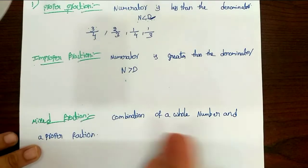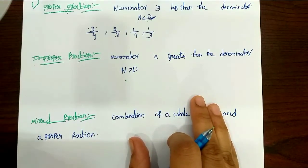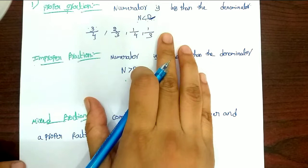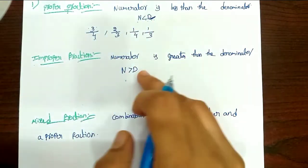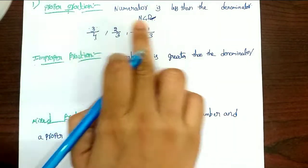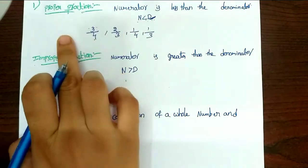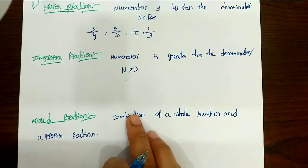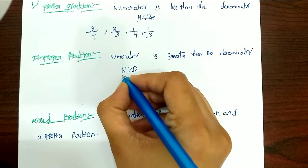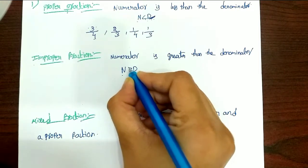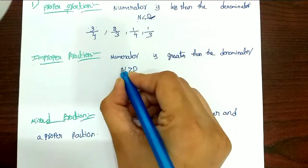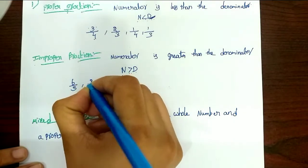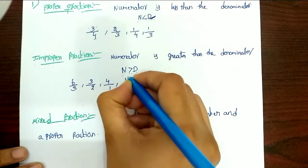In the same exercise, we have improper fractions. Proper fraction is the opposite — in an improper fraction, the numerator is much greater than the denominator. The numerator is greater than the denominator. So the improper fractions are 6 by 5, 3 by 2, 4 by 1, and 18 by 13.